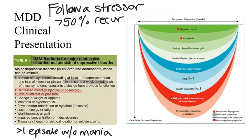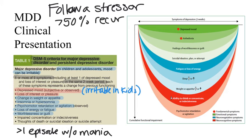It is important to note that in children and adolescents, rather than having a depressed mood, they may exhibit a more irritable or agitated mood, which is common in depression in that population. The other possible symptoms of depression include change in weight or appetite either up or down, insomnia or hypersomnia, psychomotor retardation — slowed movements, speech, and thought — or psychomotor agitation, which is restlessness. Additionally, loss of energy or fatigue, feelings of worthlessness or guilt, impaired concentration, and thoughts of death, suicidal ideation, or possibly suicide attempt.